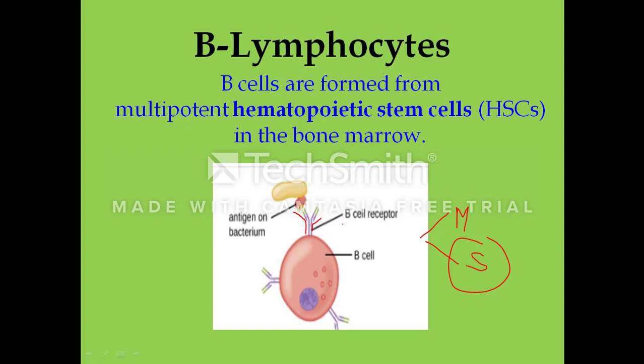The membrane-bound cell receptors have antibodies attached to the surface of the B cell. These B cell receptors have an antigen binding site that is very specific — it binds to the antigen and activates the immune response, which we call the humoral immune reaction.